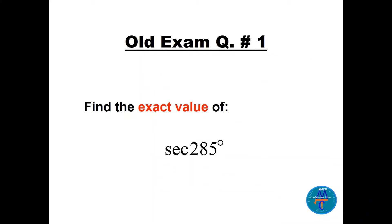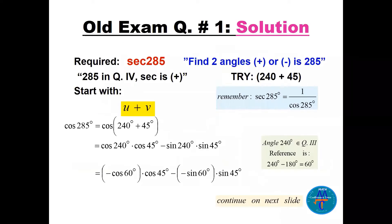Question number one: find the exact value of secant of 285 degrees without using any calculators. We need to find two angles whose sum or difference is 285 degrees. These angles must be special angles or multiples of a special angle. Since 285 is in quadrant four, the secant is positive, so let's try 240 plus 45.